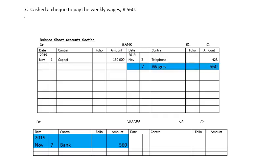On the 7th, we cash the cheque to pay the weekly wages. Bank being an asset will decrease as we are spending money. You are spending money on wages. Wages is an expense — the more money you spend, the bigger the expense becomes. So on the debit side of wages, on the 7th, you are going to write that money came from the bank — name of the other account concerned — and the money spent was $560,000 on wages.